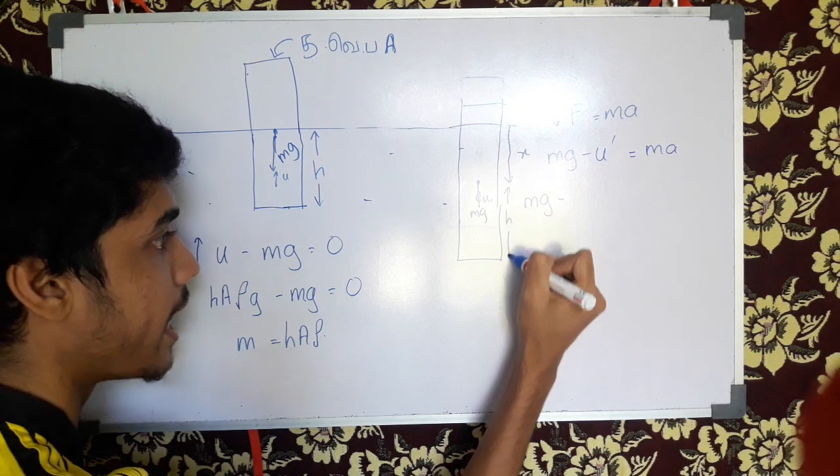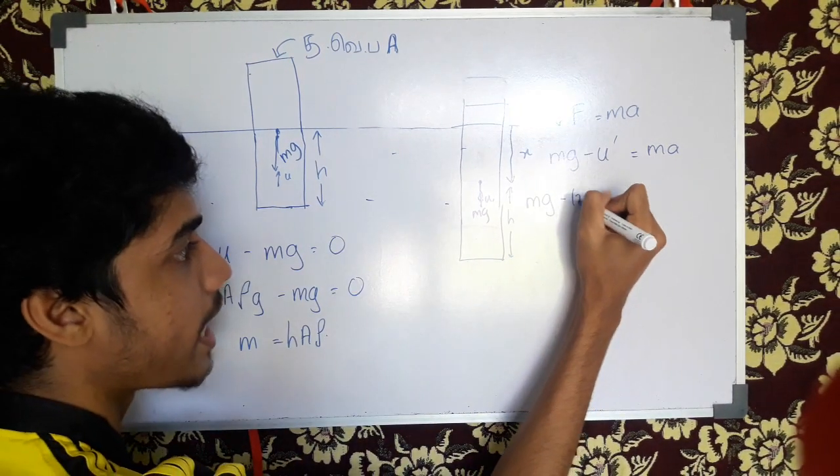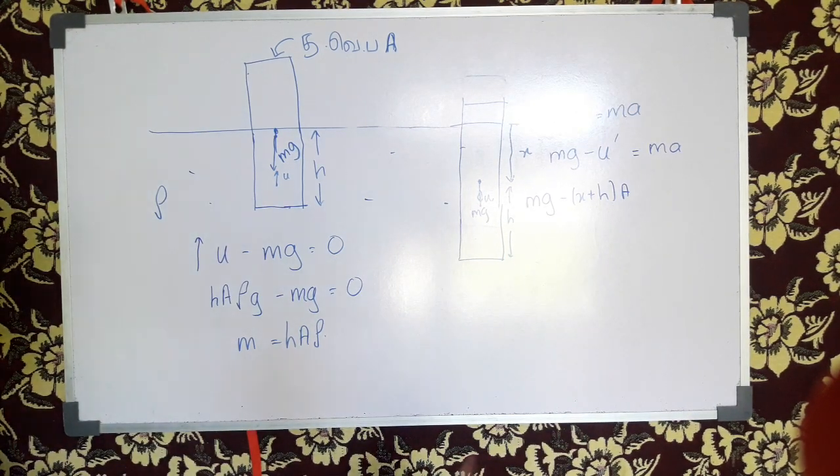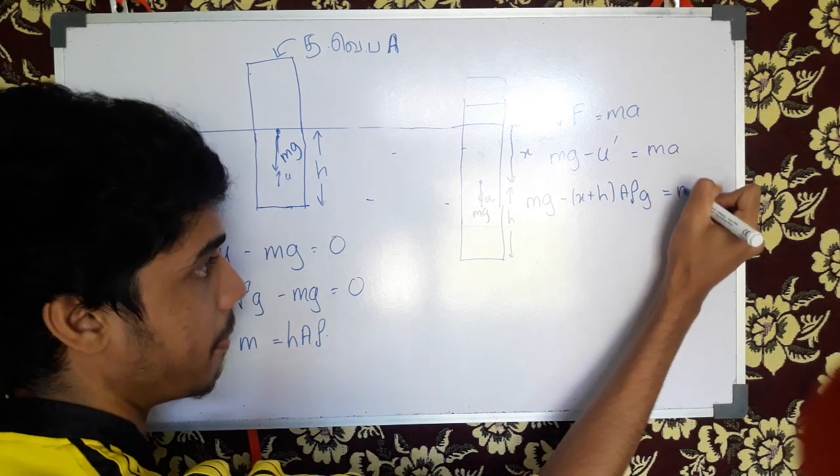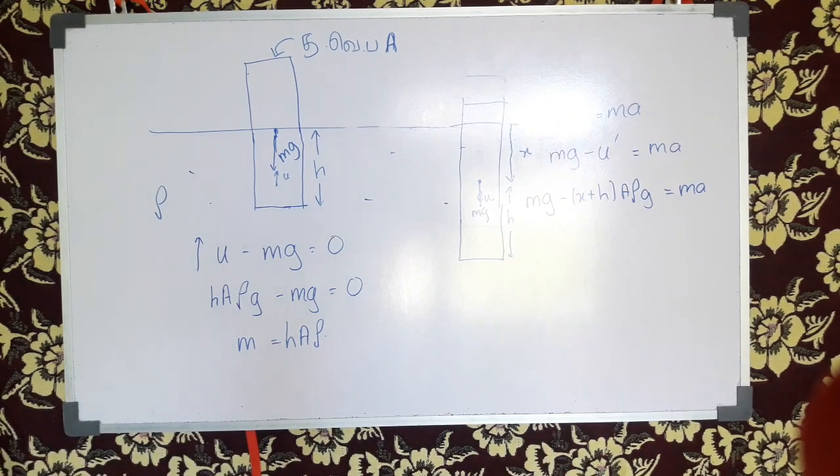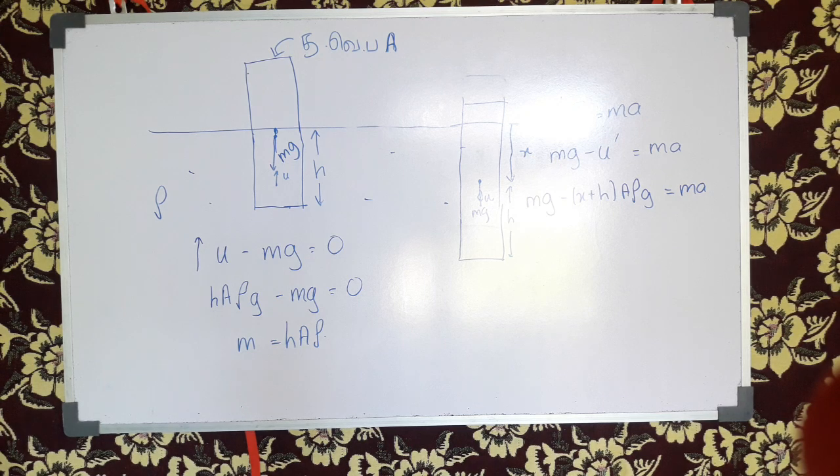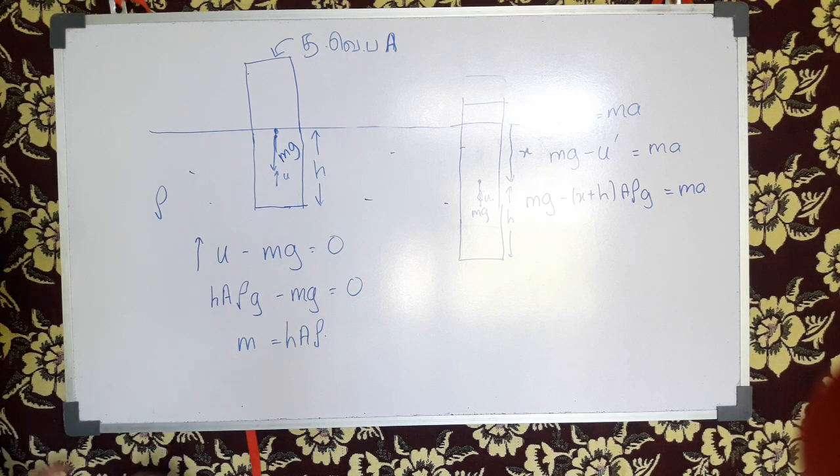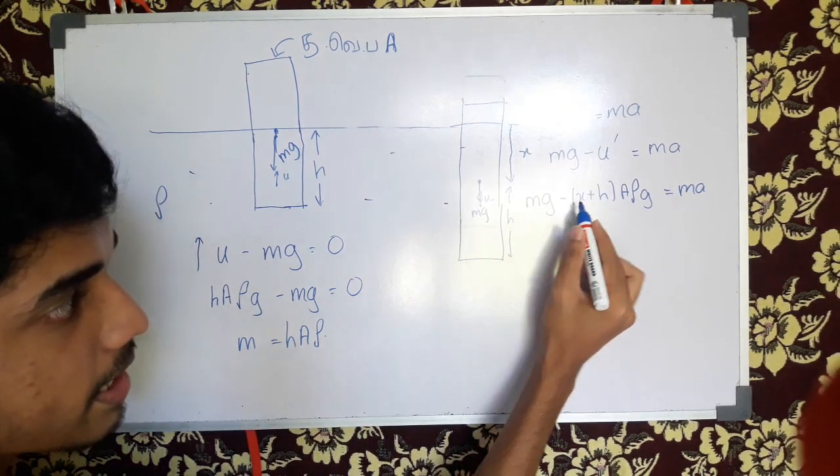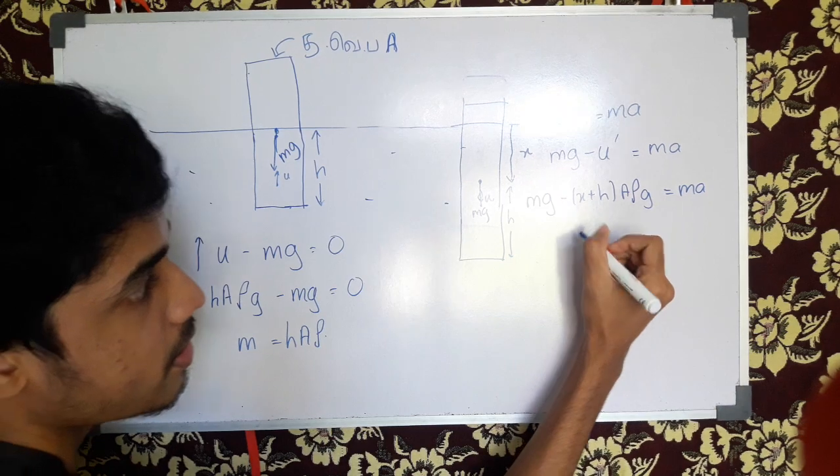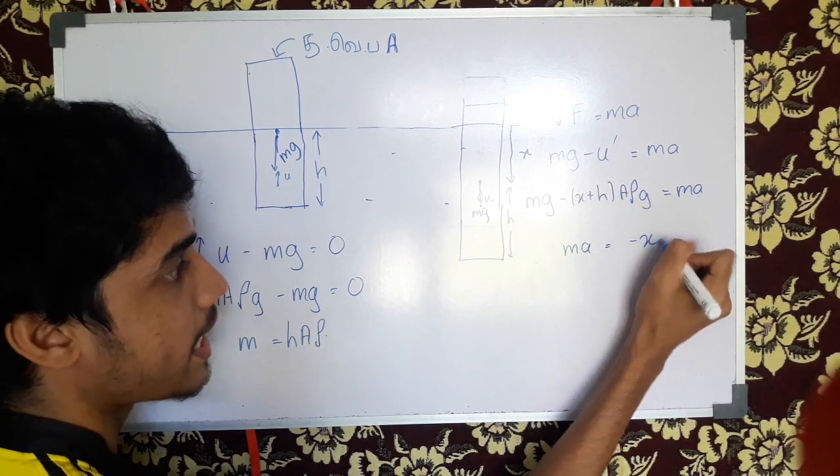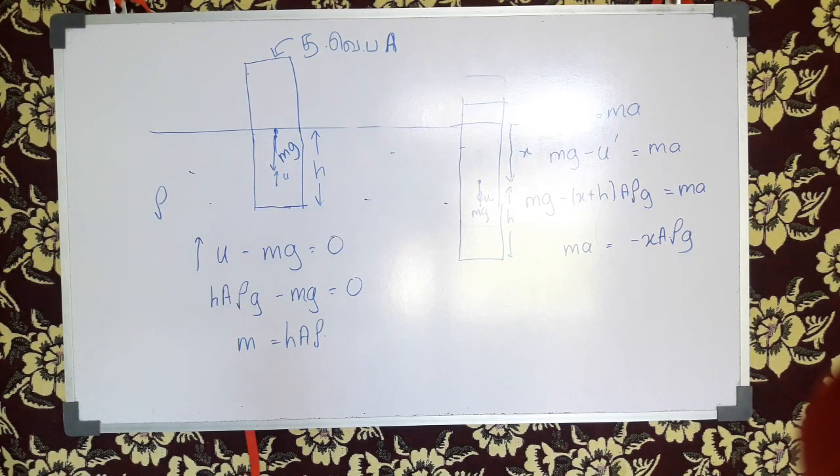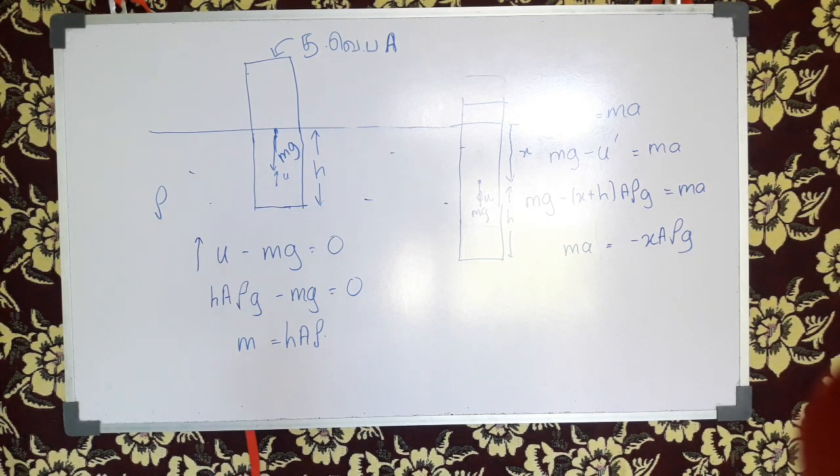If you go to the level of h into A, where you look at x plus h into A. You see at the level of h into g. When you want to pass this, m is in the middle of h A ρ g. So we will set our minus here. m a equals minus x A ρ g.